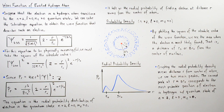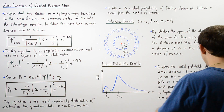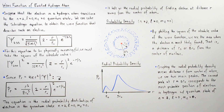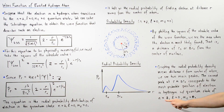So, graphing the radial probability density versus distance r from the center of the atom, we see two peaks. The second peak at about r equal to 5 times r0 corresponds to the most probable position of our electron in the hydrogen atom with the quantum state n equals 2, l equals 0, and ml equals 0.